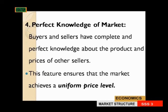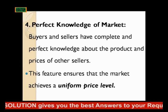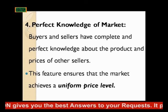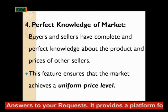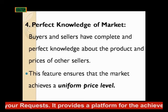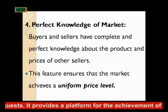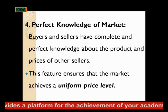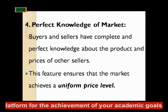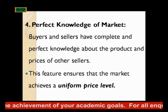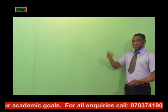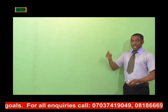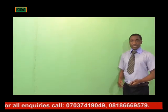Another characteristic is what we refer to as perfect knowledge of the market. All the buyers and the sellers in the market under perfect competition usually have complete ease and perfect knowledge about the products and the prices of other sellers. Therefore, they can easily determine what is really going on in the market. This feature ensures that the market achieves a uniform price level so that everybody is aware of at what price and rate one product or another is being sold.